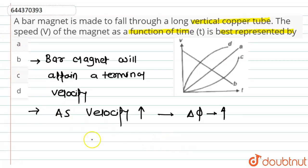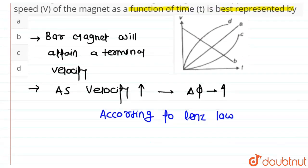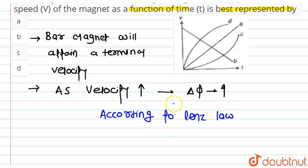Now according to Faraday's law, whenever there is a change in flux associated with a coil, an EMF is induced. According to Lenz's law, the direction of this induced EMF opposes the change of flux, so the force acting on the magnet starts decreasing.